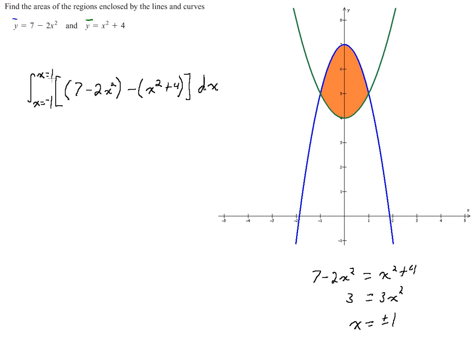I'm going to simplify this expression here first and then integrate. So I'm going to have the definite integral from negative 1 to 1. 7, distributing this negative 1 minus 4 is 3. Negative 2x squared minus x squared is negative 3x squared.